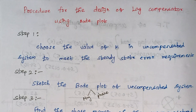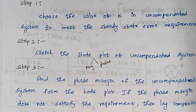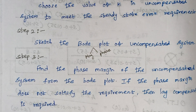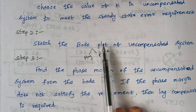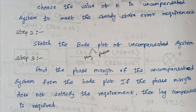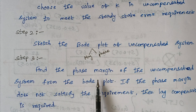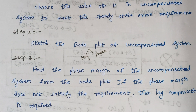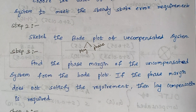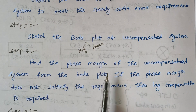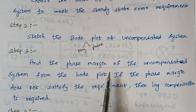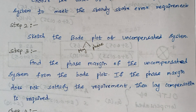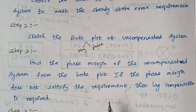After drawing the Bode plot, step 3 is to find the phase margin of the uncompensated system. From this Bode plot, we calculate the phase margin. If the obtained phase margin does not meet the phase margin given in the problem, then we have to move to lag compensation.